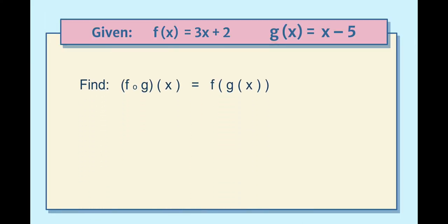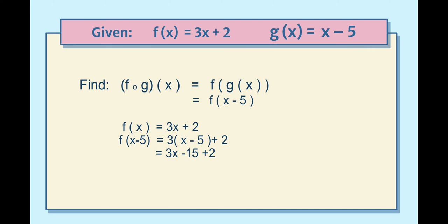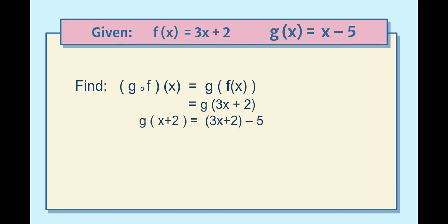Another example: (f ∘ g)(x) where g(x) = x − 5 and f(x) = 3x + 2. We substitute x − 5 for x in f: 3(x − 5) + 2 = 3x − 15 + 2 = 3x − 13. For (g ∘ f)(x), we substitute f(x) = 3x + 2 into g(x) = x − 5: (3x + 2) − 5 = 3x − 3.